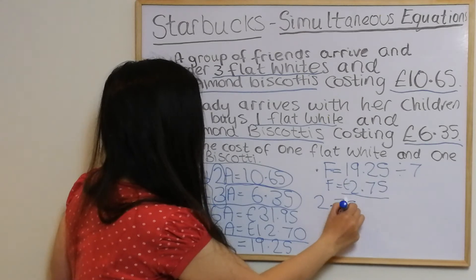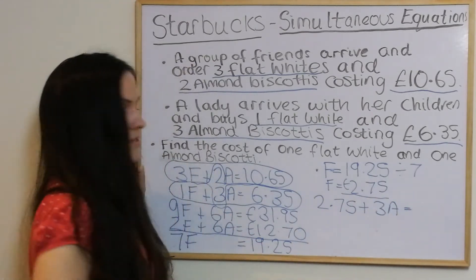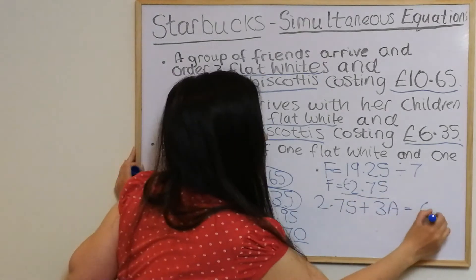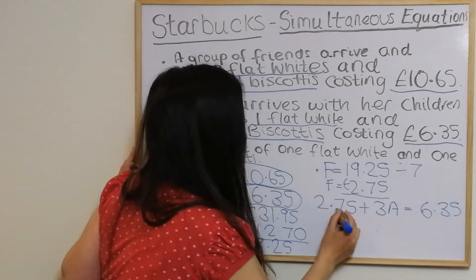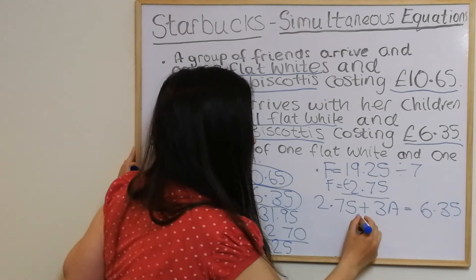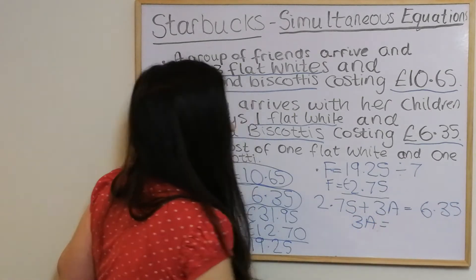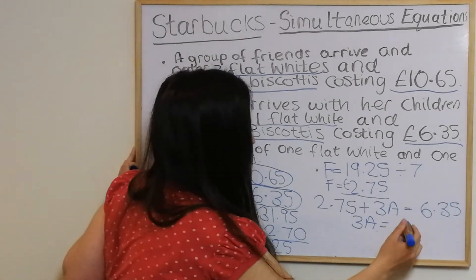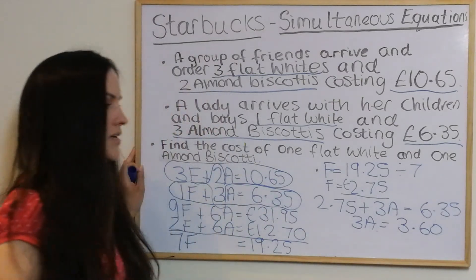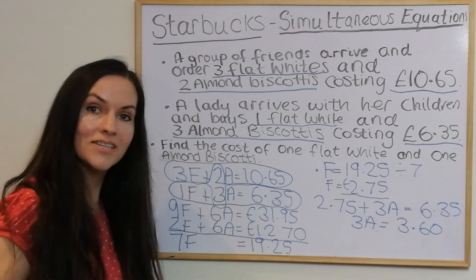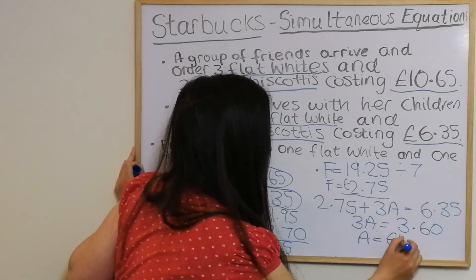We take 2.75 away from both sides to get the cost of 3 almond biscottis, which is three pounds sixty. So 3 almond biscottis are three pounds sixty, meaning one almond biscotti is one pound twenty.